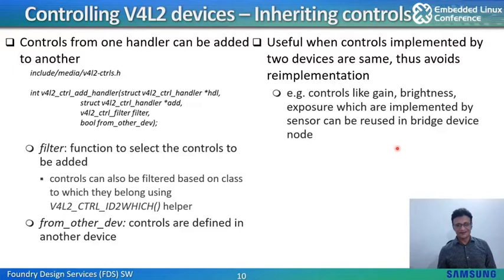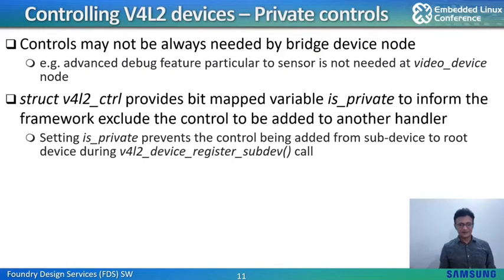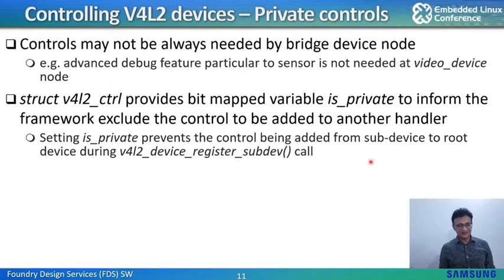There can be occasions when adding controls where some of them might not need to be added. For example, when a debug feature is implemented by a sensor, such a control is not always needed to be added to the bridge device node. In such cases, struct V4L2_ctrl provides a bitmap variable is_private to inform the framework to exclude that control from being added. Also, controls added from a sub-device can be overwritten by the bridge device driver during sub-device registration. Setting the is_private parameter prevents controls from being added from the sub-device to the root device during the V4L2_device_register_subdev call.